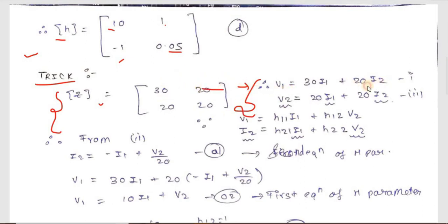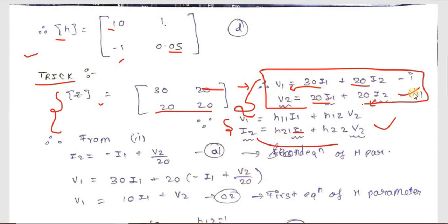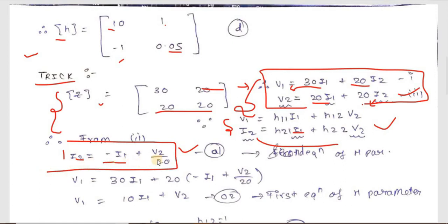Writing out the Z-parameter equations: v1 = 30·i1 + 20·i2 and v2 = 20·i1 + 20·i2. We need h-parameter form: v1 and i2 on the left in terms of i1 and v2 on the right. Rearranging the second equation by moving i1 to the left and dividing by 20 gives i2 = −i1 + v2/20. This is directly the second h-parameter equation, yielding h21 and h22.